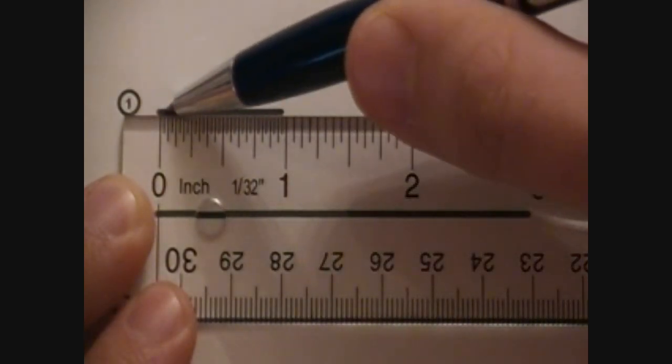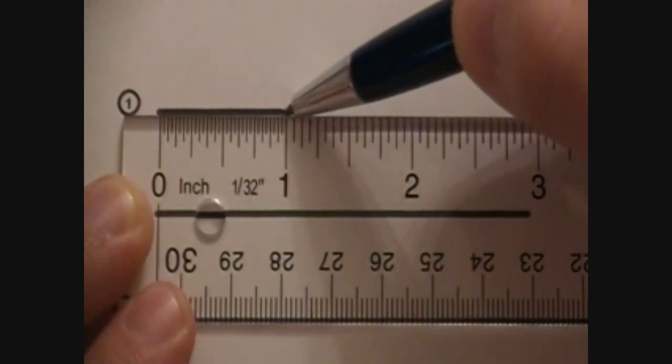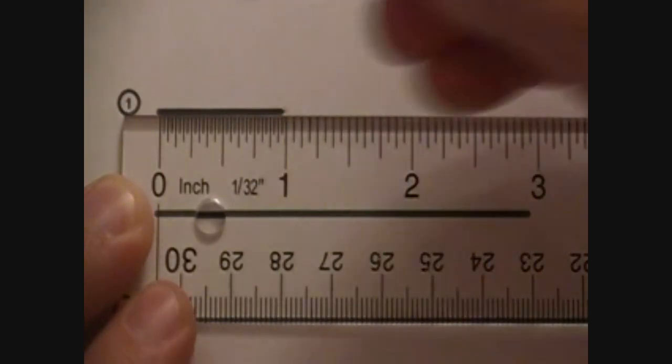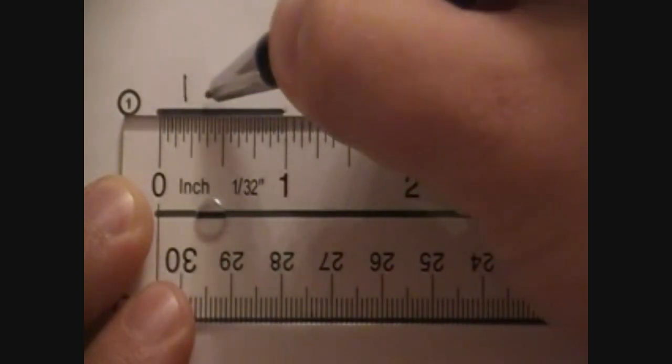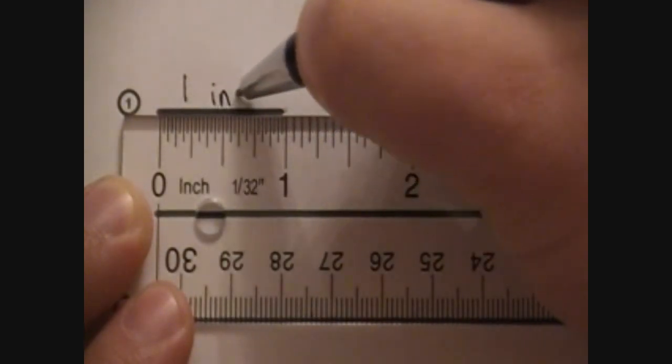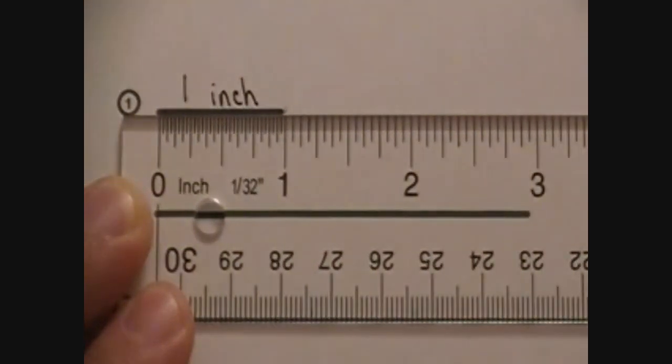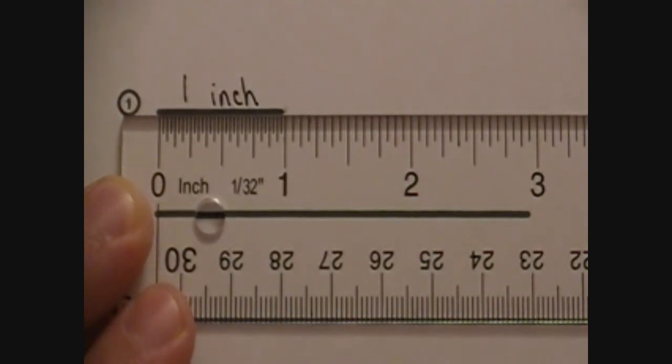I'm starting here at 0, follow it to the end, and it ends right here, which is a 1 inch line segment. So I'm going to write 1 inch on that top line. That lets me know that's a 1 inch line segment.